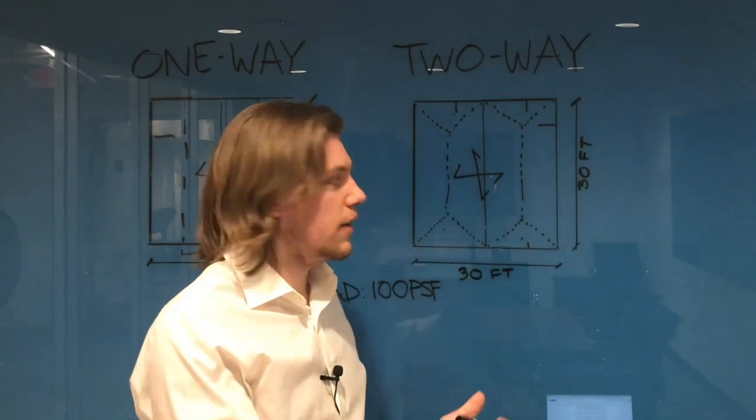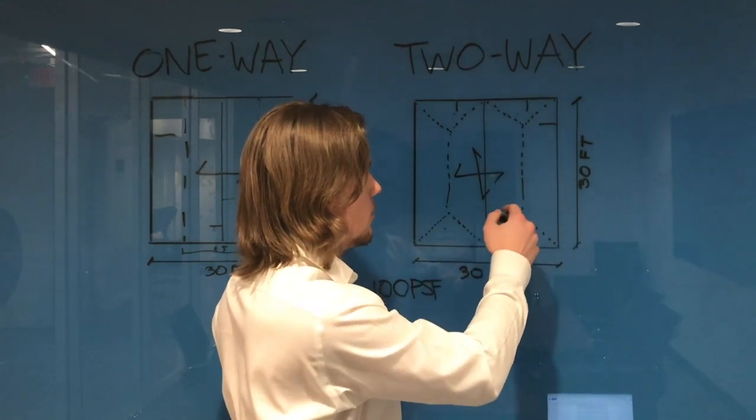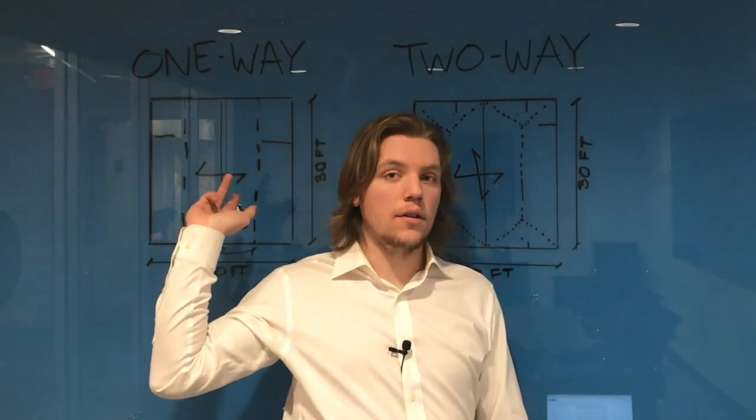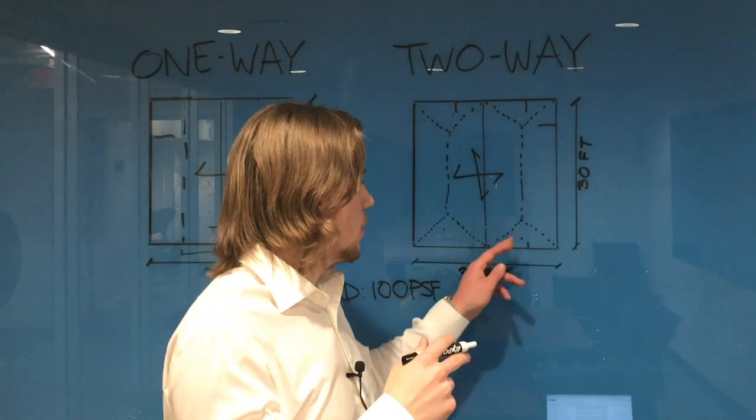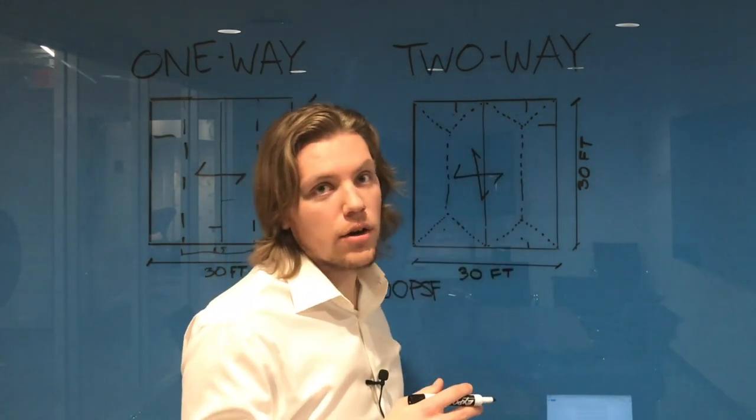And so after we're done drawing it, now we have our tributary area of the beams, just like we have the tributary area on this side as well. So again, difference here is the triangles that are loading the girders up.